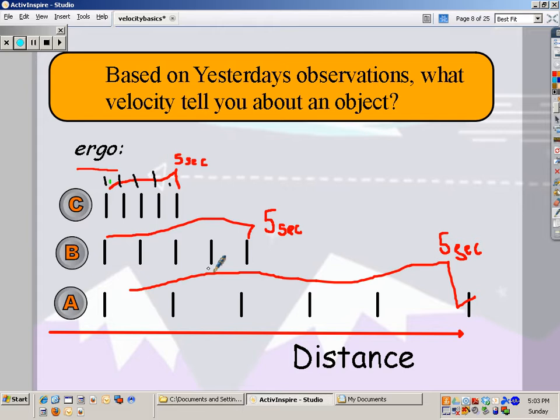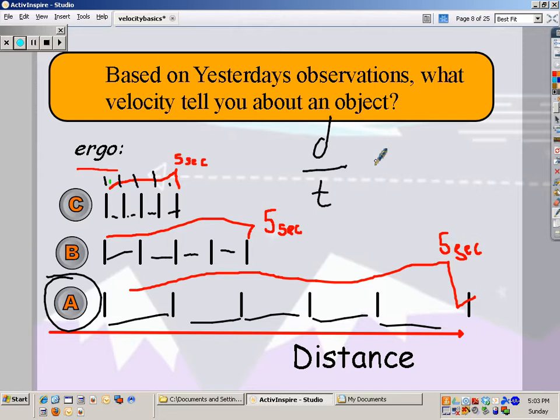Well, A is going the fastest because every second it's covering more distance. B is going the second fastest. C is going the slowest. So all velocity tells us is how much distance are you covering in a certain amount of time. Or, to be more correct, what's the displacement during a certain amount of time.